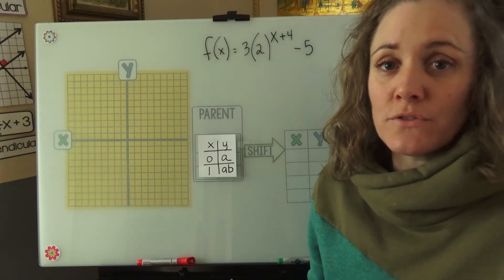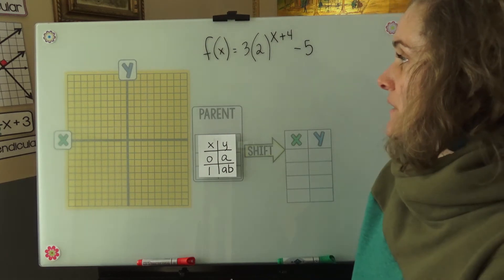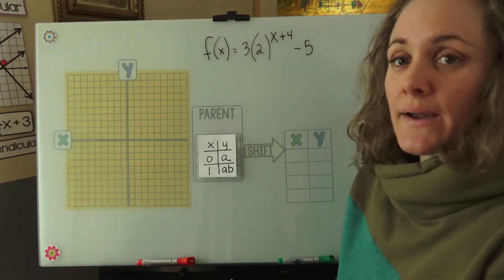Today we're going to be graphing exponential functions. I chose an exponential function, f of x equals 3 times 2 to the x plus 4 minus 5.